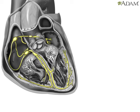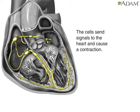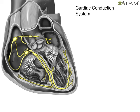A network of specialized muscle cells is found in the heart's walls. These muscle cells send signals to the rest of the heart muscle, causing a contraction. This group of muscle cells is called the cardiac conduction system. The main parts of the system are the SA node,